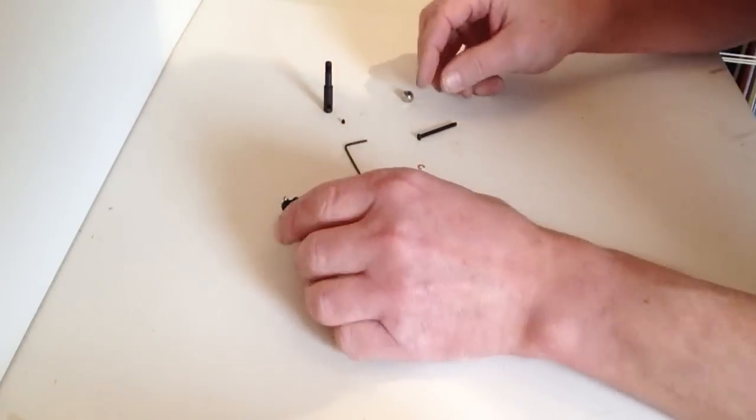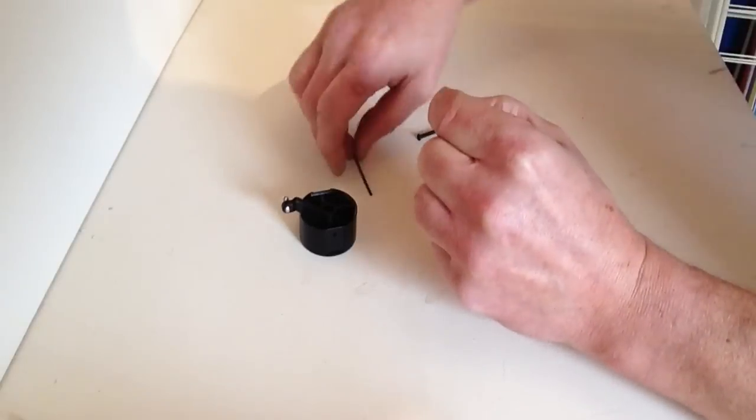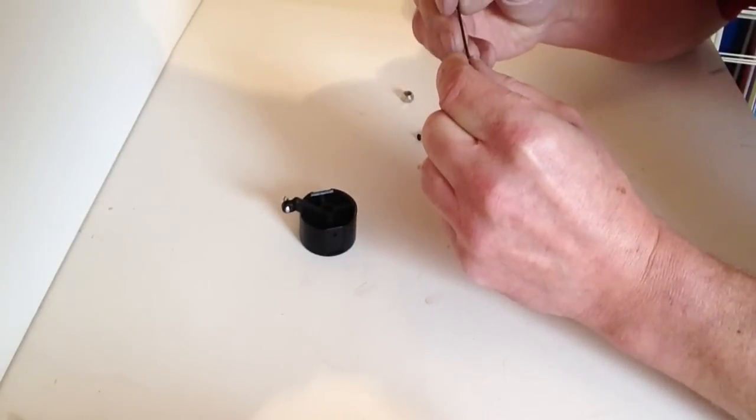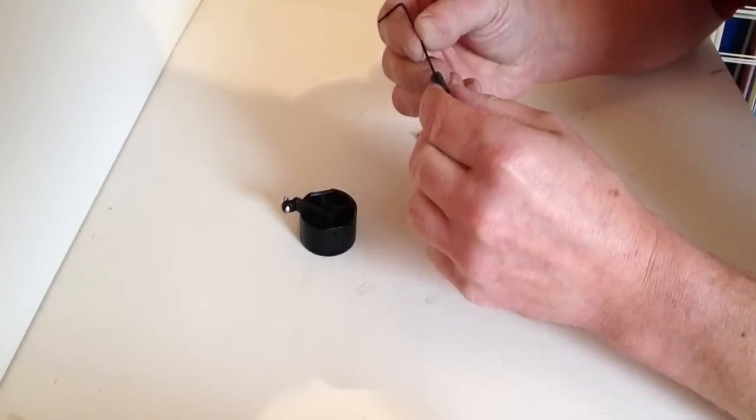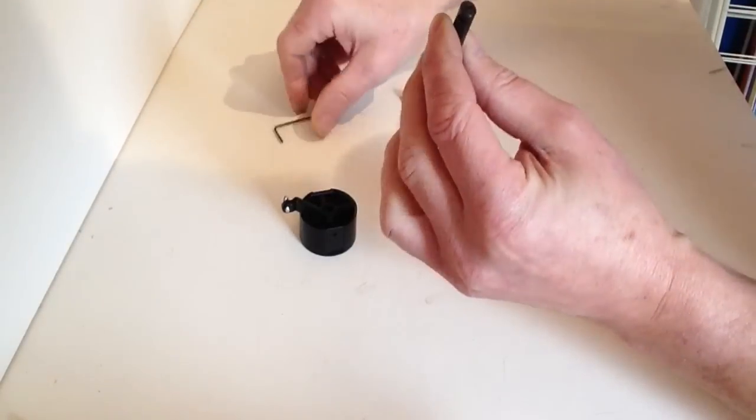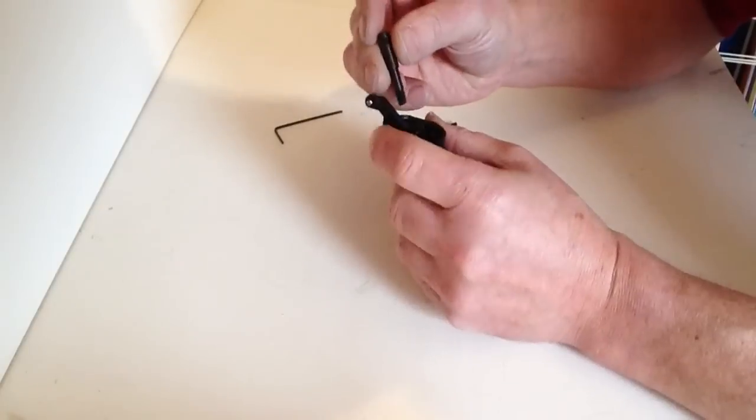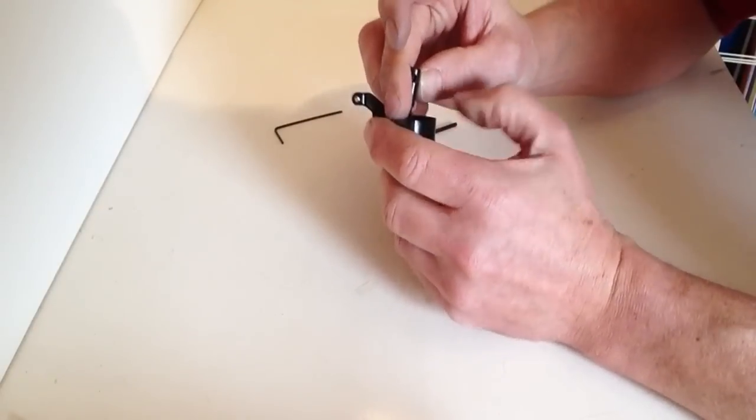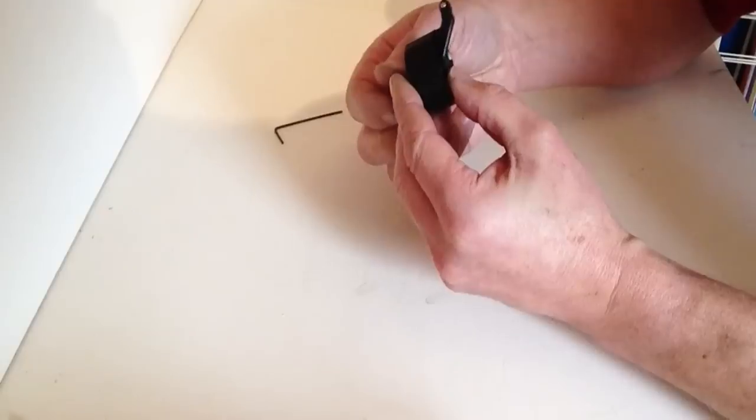Once you've done that, take your allen key and your little allen screw and just put that in the end of the shaft. Don't put it all the way in, just put it in there like so, ready for the next stage. What we're going to do is put that into the shaft like so.